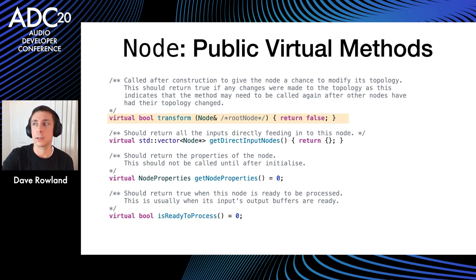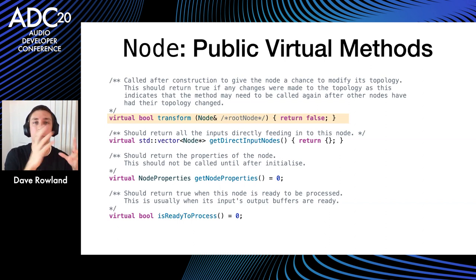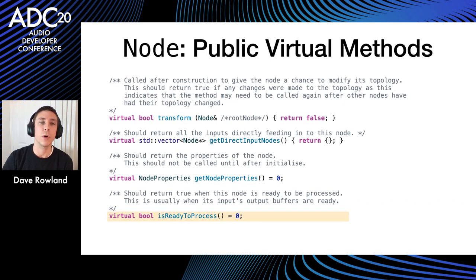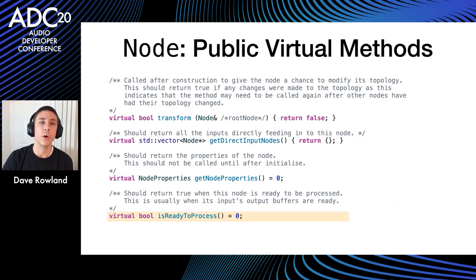Looking at the virtual methods in more detail: there's a transform call giving nodes a chance to change their topology, called repeatedly until you return that no topology change occurred. You return your inputs — this is how the graph structure is formed and traversed. You declare your properties as a struct with various fields. And you state when you're ready to be processed, which is usually when all your inputs have been processed.